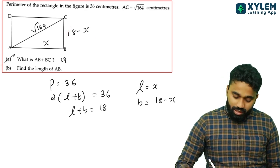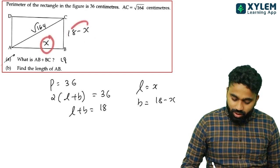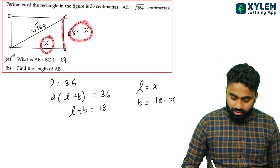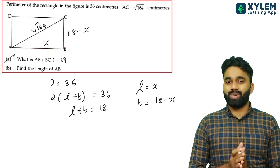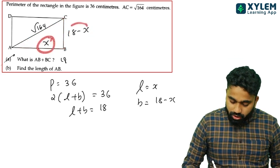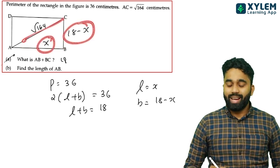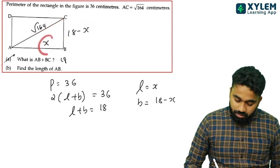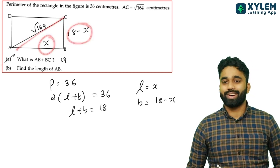This is the theory of Pythagoras. The right angle theorem: base squared plus height squared equals hypotenuse squared. So: length squared plus breadth squared equals the diagonal squared.